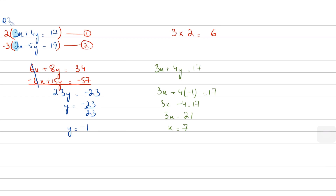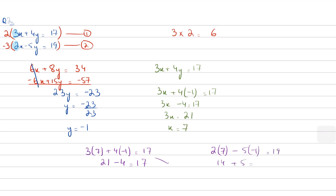Remember, you can always check your answer — and it's recommended that you do. I'll plug in the values of x and y into both equations to make sure the left-hand side equals the right-hand side. For equation one: 3 times 7 is 21, and 21 minus 4 is indeed 17. For equation two: 2 times 7 is 14, and minus 5 times minus 1 is plus 5, so 14 plus 5 equals 19. Both check out — we've figured out the values correctly.